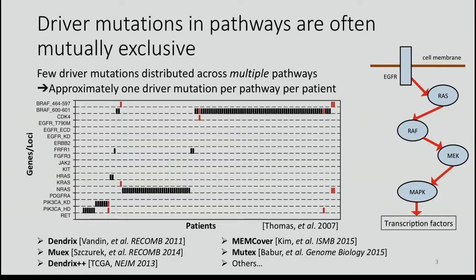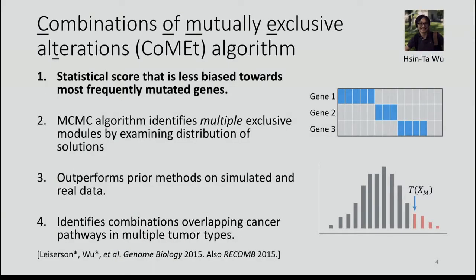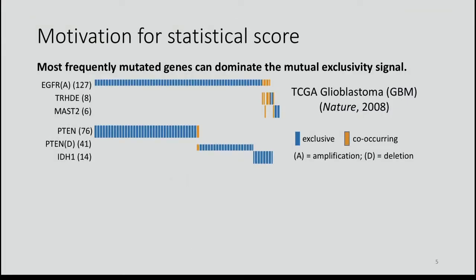Over the last five years, a number of different methods have been introduced for identifying mutually exclusive mutations — it's a very active field with multiple publications from last year. We're going to talk about our method: the Combinations of Mutually Exclusive Alterations, or COMET algorithm, published last year in Genome Biology, joint work with Shen-en Woo. COMET includes a new statistical score that is less biased towards the most frequently mutated genes in your dataset, searches for multiple sets simultaneously, and outperforms other methods on simulated and real data.